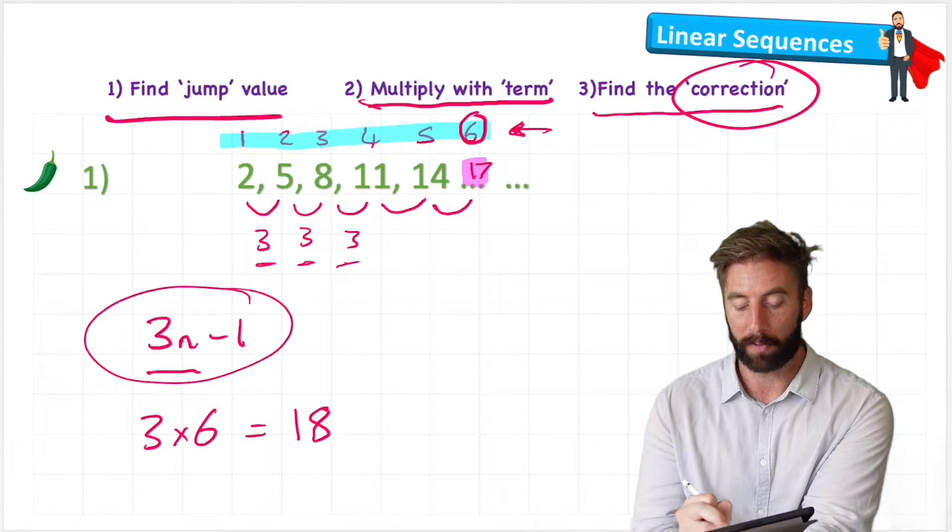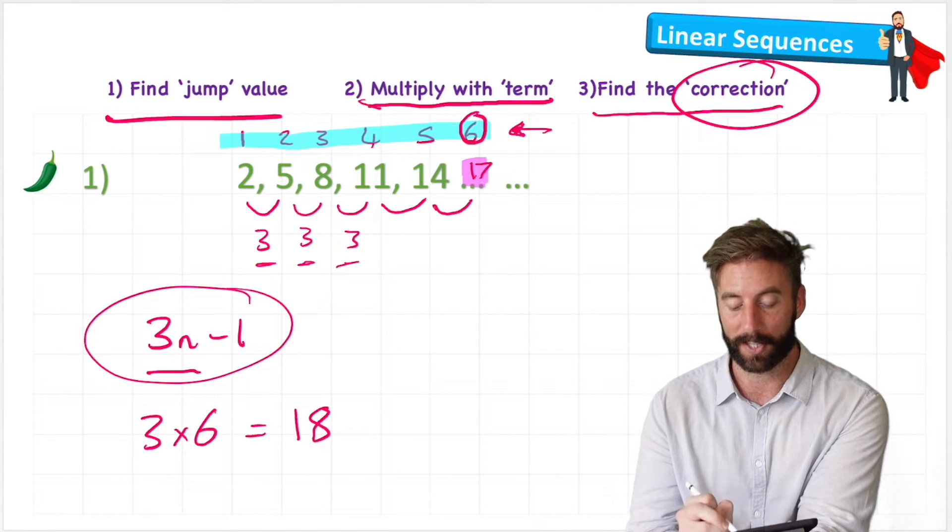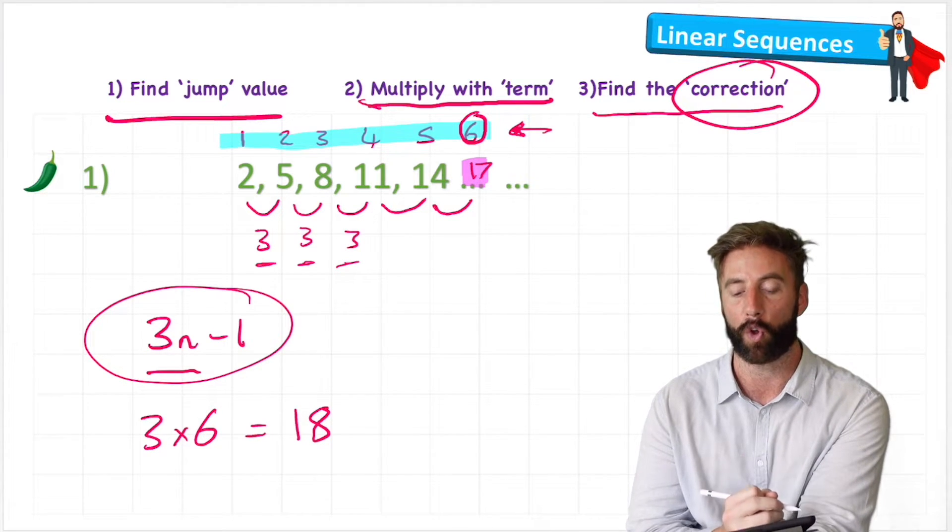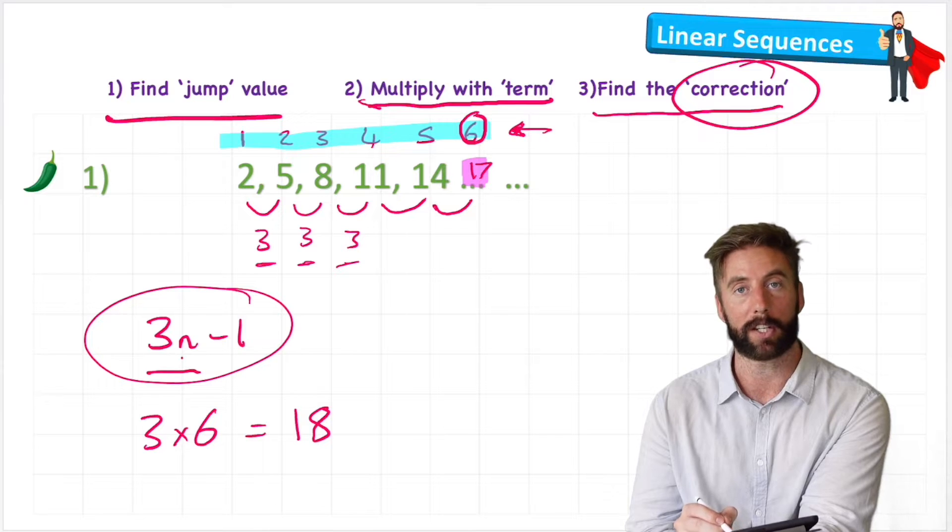So therefore, my formula for this sequence is 3n minus 1: 3 times the position of the number I'm looking for, minus 1 to correct.